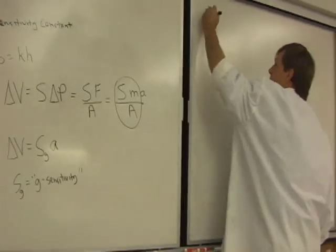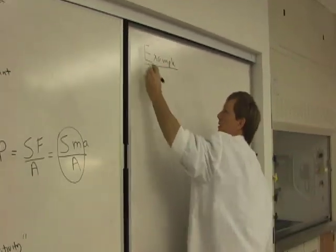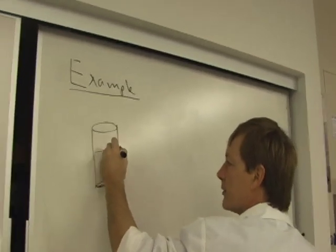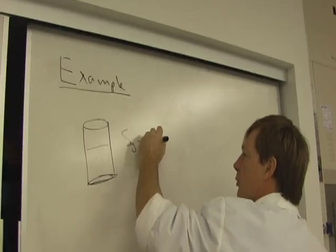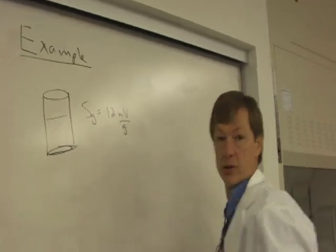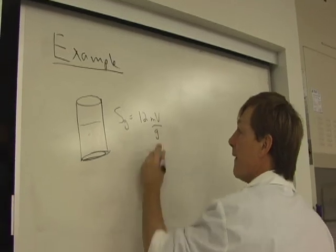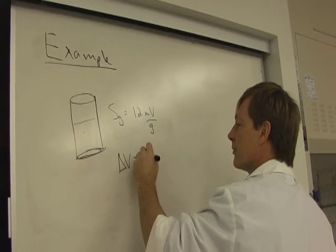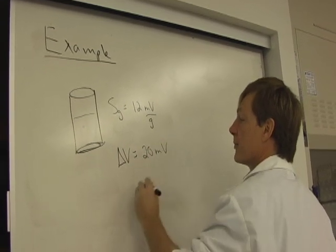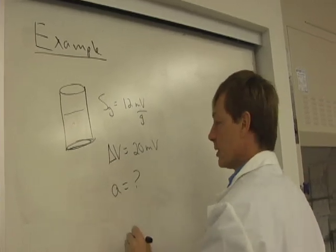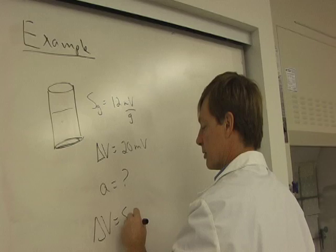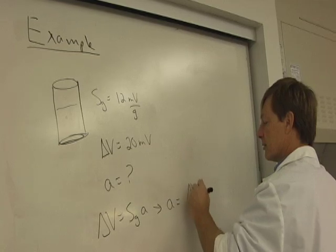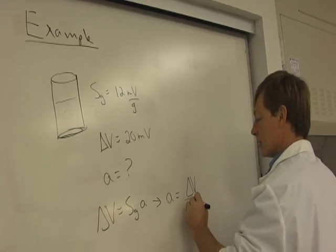For example, let's say I've got this accelerometer here, and I read, and it's got a g sensitivity of 12 millivolts per g. And g is, like I said, a unit of acceleration. And I get a reading, a voltage reading, of 20 millivolts. And I want to know, what's the acceleration? Well, voltage is equal to g sensitivity times acceleration. So the acceleration is equal to the voltage measured divided by the g sensitivity.